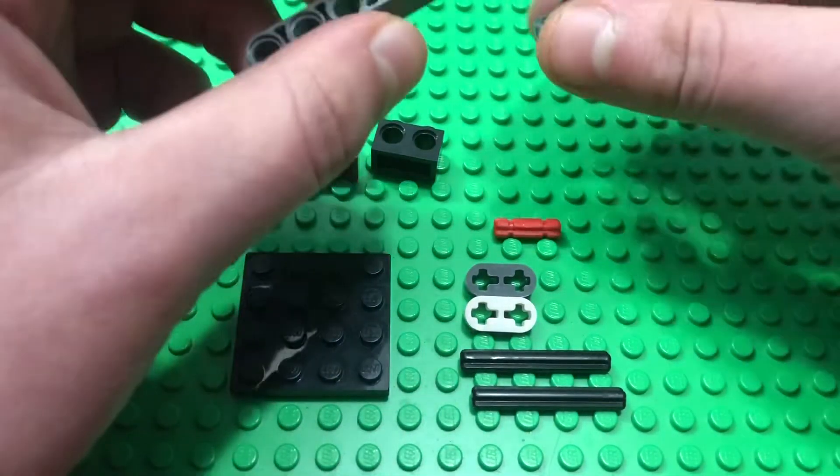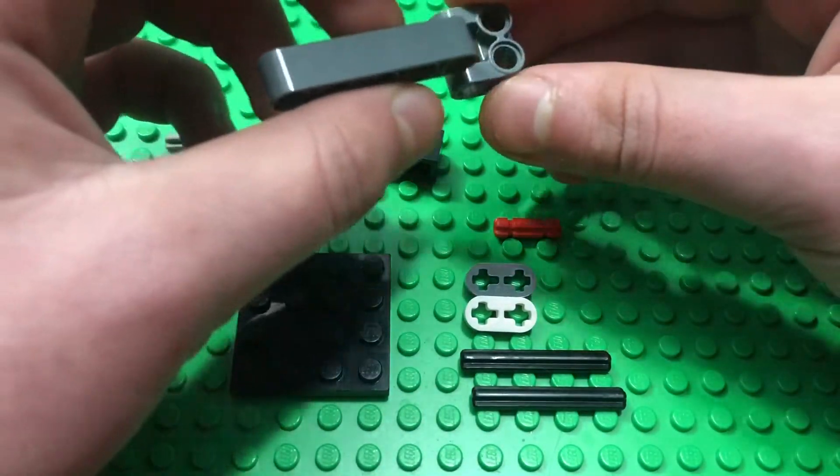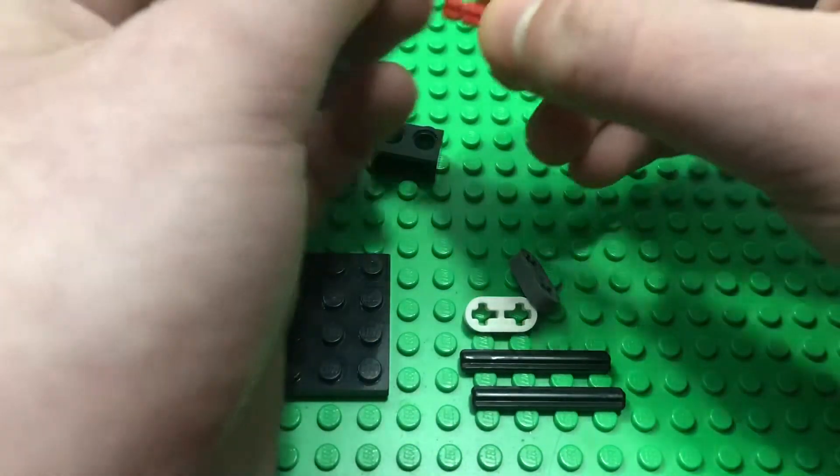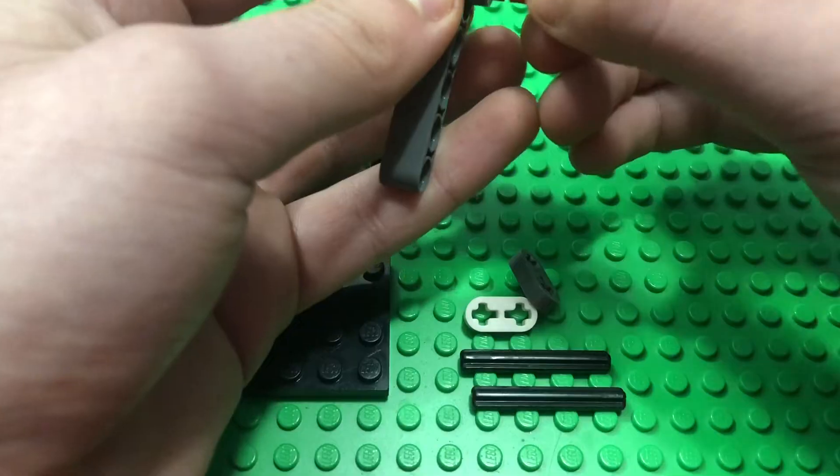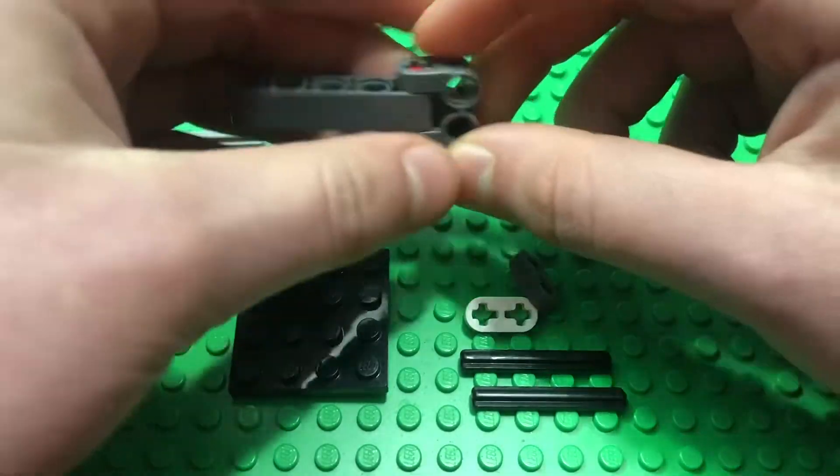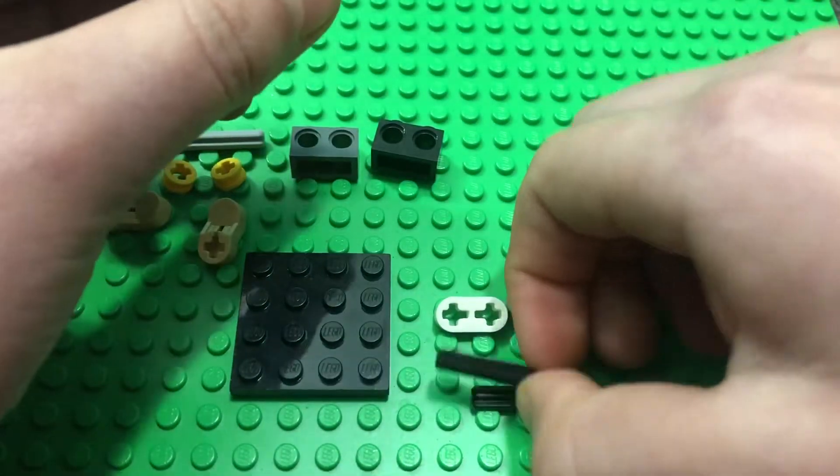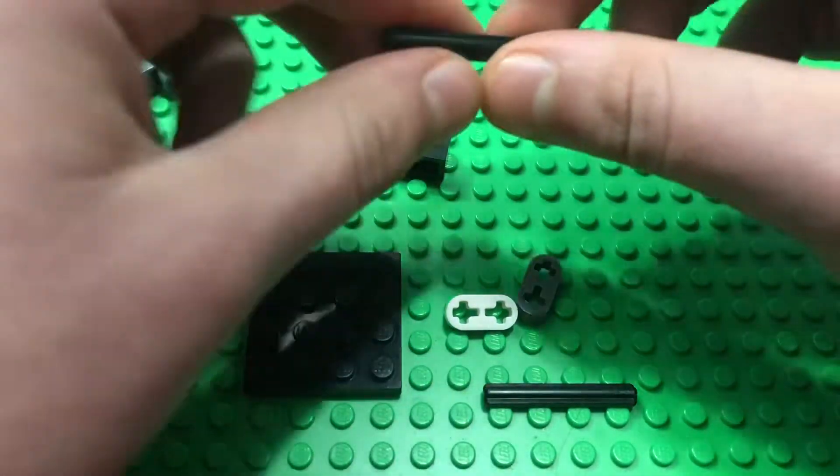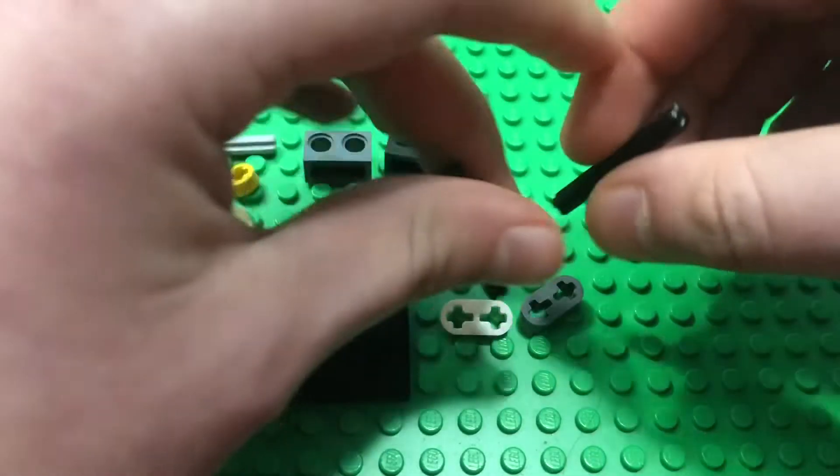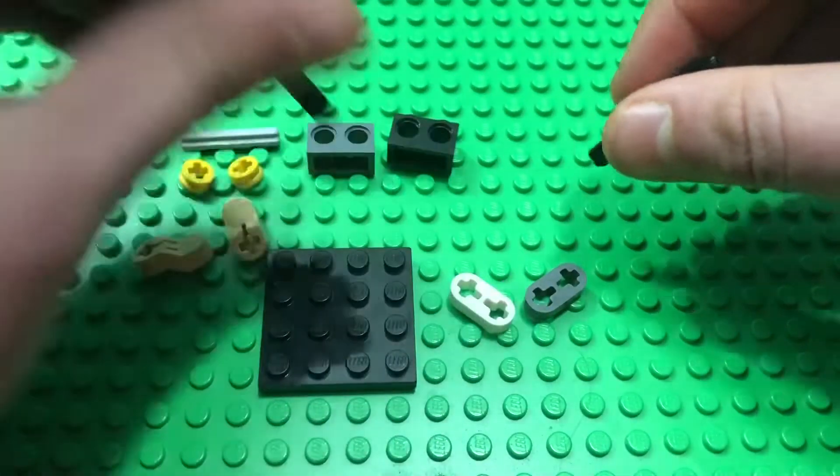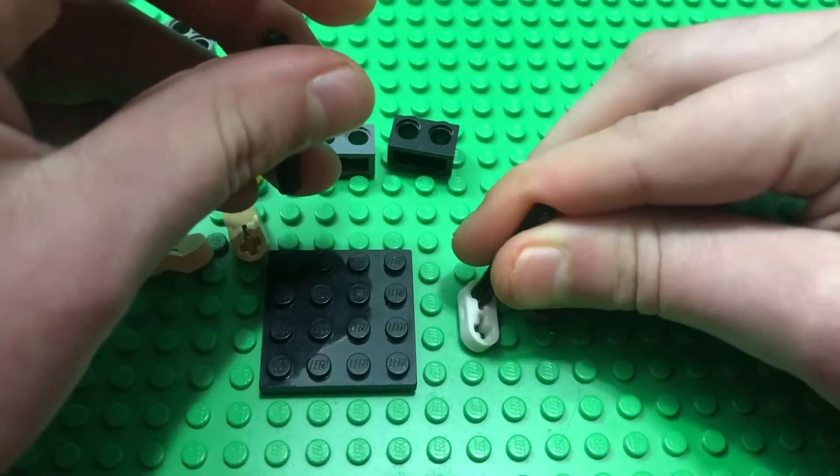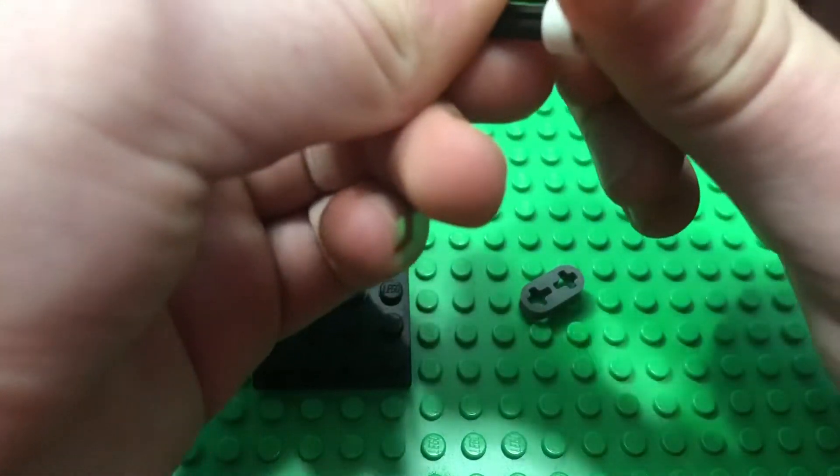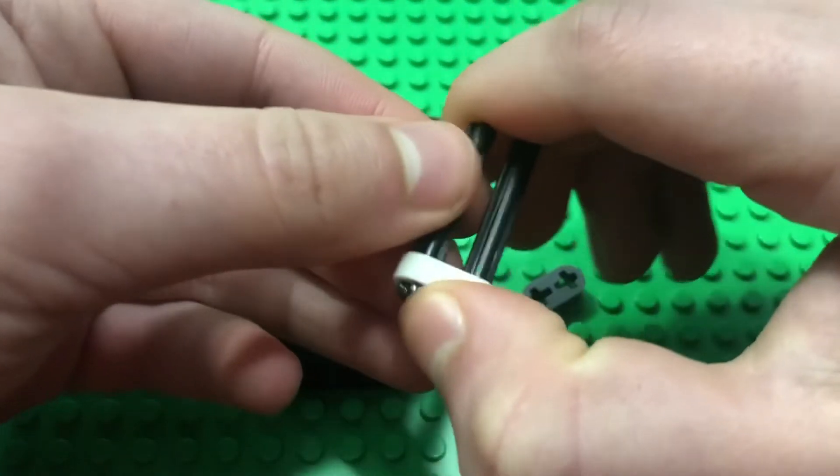The first thing you want to do is take your one by five and that piece and put it together like this. Take the two long axle and put it through just like that. Next, grab your two four long axles and you're going to put them through the two long pieces.